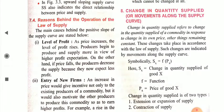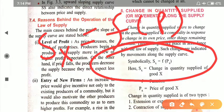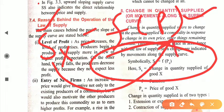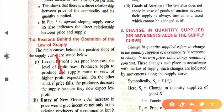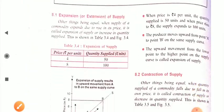We can see this with the help of an equation: supply of commodity X is a function of price. This means supply is the dependent variable and price is the independent variable. Supply depends on price — when price increases, supply increases; when price decreases, supply decreases.